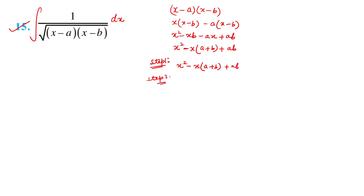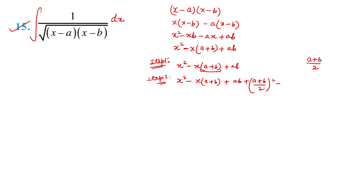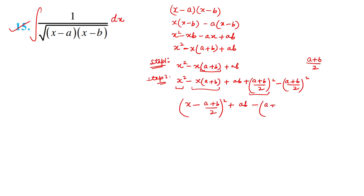So x² - x(a+b) + [(a+b)/2]² = (x - (a+b)/2)². The remaining terms are ab - [(a+b)/2]². Expanding [(a+b)/2]² = (a² + b² + 2ab)/4. Taking LCM: 4ab - a² - b² - 2ab = 2ab - a² - b² = -(a² - 2ab + b²) = -(a-b)². So we have -(a-b)²/4, giving (x - (a+b)/2)² - [(a-b)/2]².